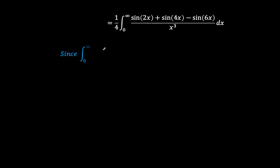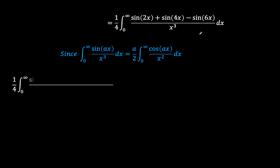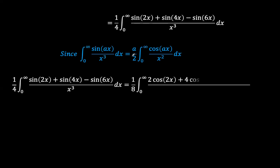We can now use our result that the integral of sin(ax) over x cubed equals (a/2) times the integral from 0 to infinity of cos(ax) over x squared. Applying this, a quarter of sin(2x) plus sin(4x) minus sin(6x) over x cubed becomes 1 over 8 times the integral from 0 to infinity of 2·cos(2x) plus 4·cos(4x) minus 6·cos(6x) over x squared.